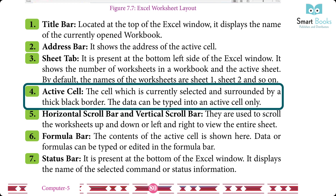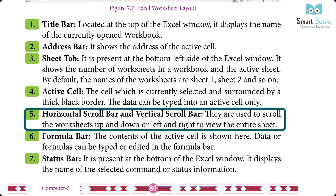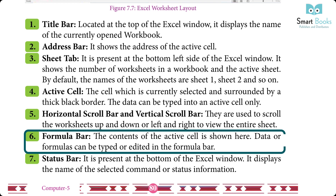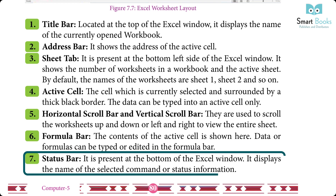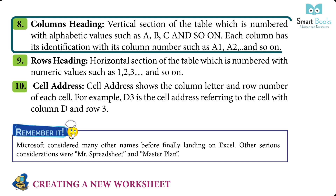Five — Horizontal and Vertical Scroll Bars: used to scroll the worksheet up and down or left and right to view the entire sheet. Six — Formula Bar: the content of the active cell is shown here; data or formulas can be typed or edited in the formula bar. Seven — Status Bar: present at the bottom of the Excel window, it displays the name of the selected command or status information. Eight — Column Heading: the vertical section of the table numbered with alphabetic values such as A, B, C, and so on.